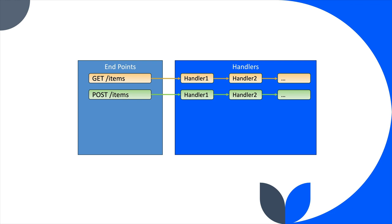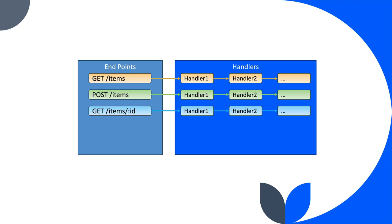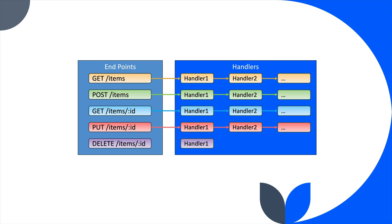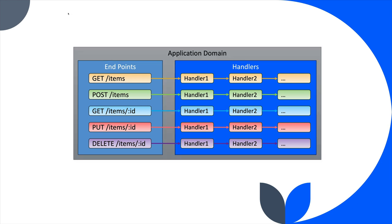Let's continue by adding a few more endpoints and handlers to our application. We have a POST to create a new item, GET item with an id to retrieve a specific item, PUT to update a specific item, and of course DELETE. This is all within our application domain — the endpoints and handlers are part of our application.